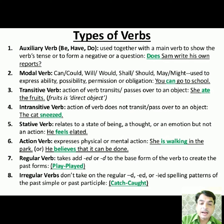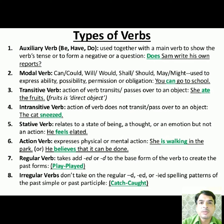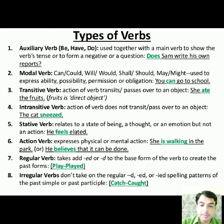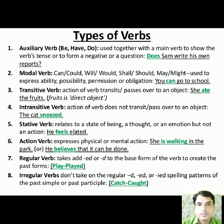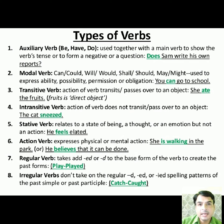Regular verbs are those verbs which take 'ed' or 'd' added to the base form to create the past forms. Any verb which becomes past tense by adding 'd' or 'ed' at the end is called a regular verb. All other verbs are called irregular verbs. Irregular verbs don't take the regular 'd,' 'ed,' or 'ied' spelling patterns for the simple past or past participle. For example, 'catch' never becomes 'catched' — it always becomes 'caught.' However, 'play' becomes 'played,' so 'play' is a regular verb and 'catch/caught' is an irregular verb.